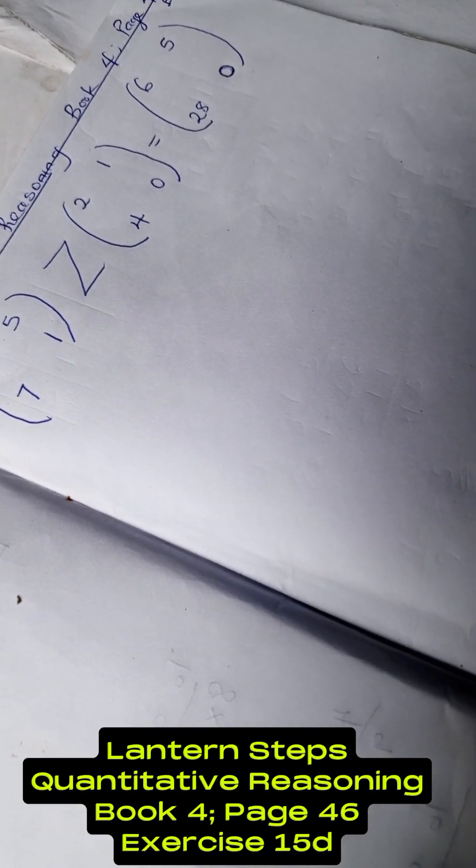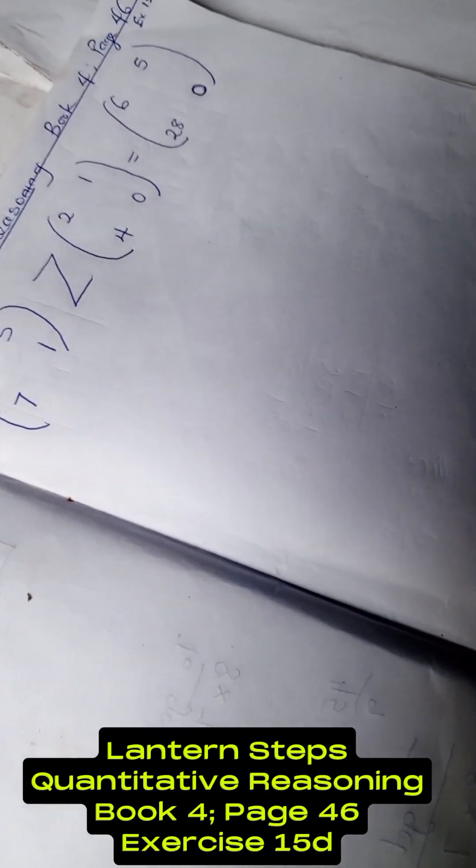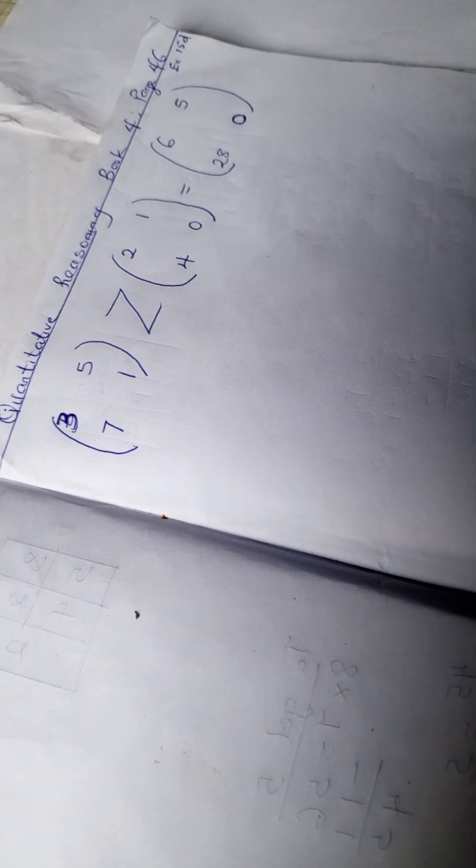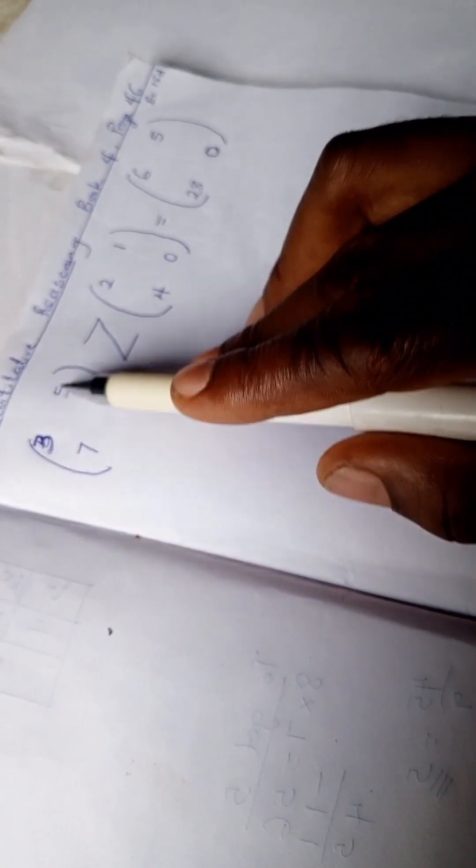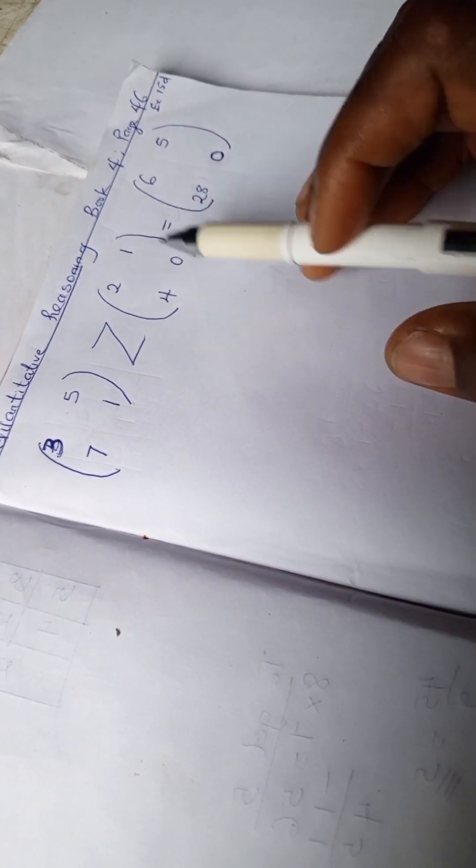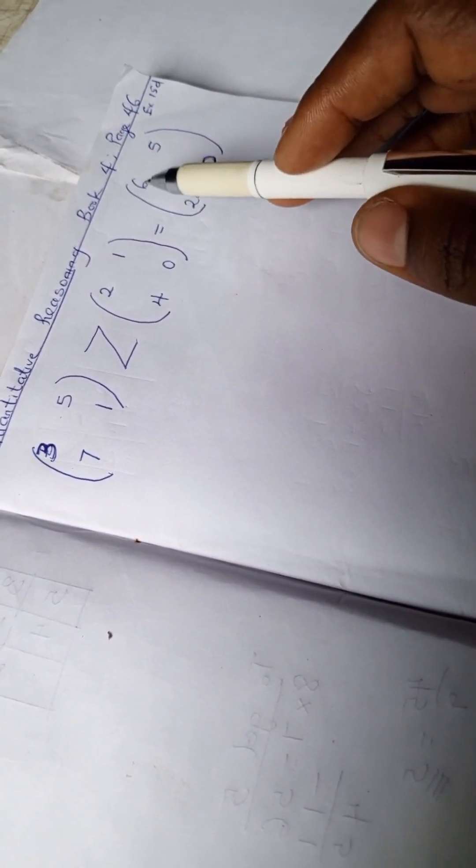Hello, welcome to quantitative reasoning solution session. Today we have this problem from Book 4, Lantern Step Quantitative Reasoning. We have 3, 5, 7, 1, and here we have 2, 1, 4, 0.